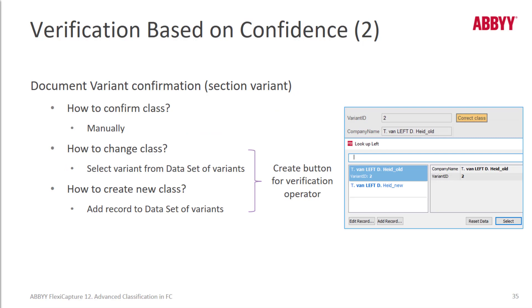When a verifier needs to confirm a variant of a class, she or he can do this manually by selecting the Confirm Document Definition option from the right-click menu on the verification station.